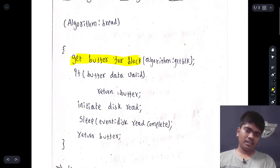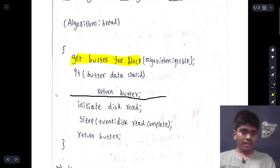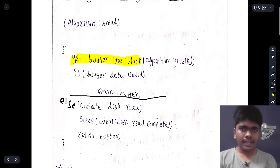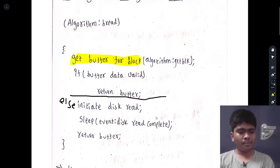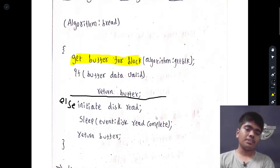The else condition is: initiate disk read. If the data is not present in that particular buffer, we need to give the data to that particular data structure. We can't do anything with the cache memory, so we need to get inside the disk blocks and initiate the disk read.